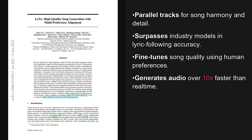The key takeaway here is really its clever dual-track approach, using a language model for the big-picture harmony and that specialized auto-regressive decoder for the fine details. This allows for incredibly high-quality song generation that can actually follow complex text prompts. It's a big step forward for creative AI tools. Thanks for tuning in to the AI Research Roundup. I'm your host Alex, and I'll see you next time.